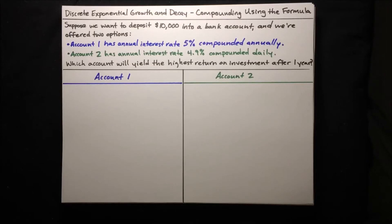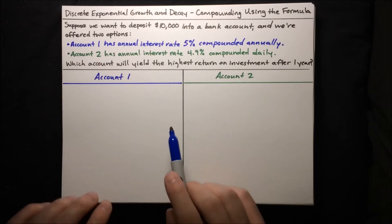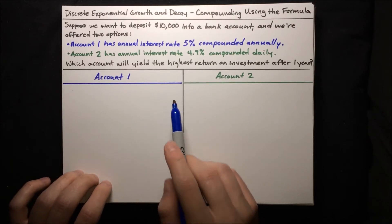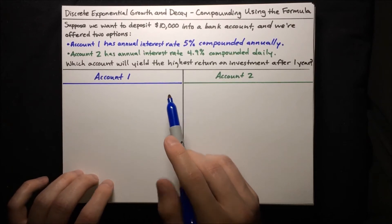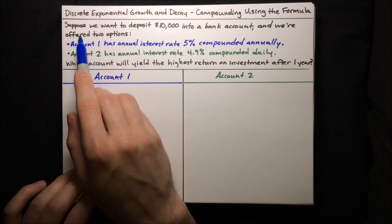In this video, we're going to talk about discrete exponential growth and decay. In particular, we're going to be compounding using a formula that we will get to after this example. But the first example is going to motivate the use of this formula.